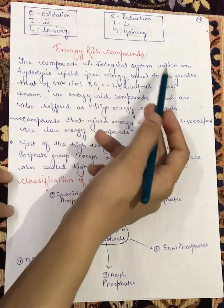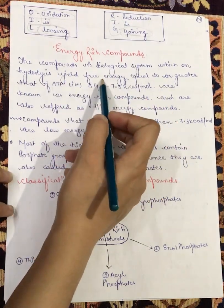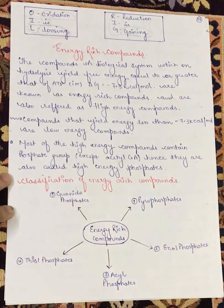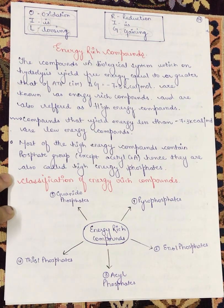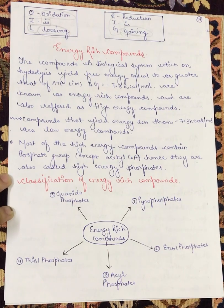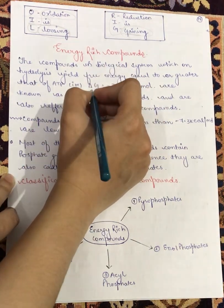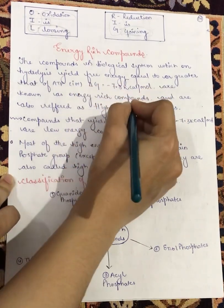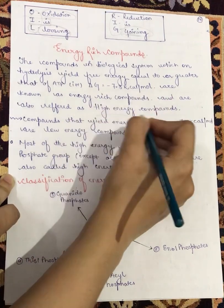Energy-rich compounds are the compounds in a biological system which on hydrolysis — meaning breakdown in water molecules — yield free energy equal to or greater than that of ATP. Delta G should be minus 7.3 kilocalories per mole. These are known as energy-rich compounds, and they are also referred to as high-energy compounds.